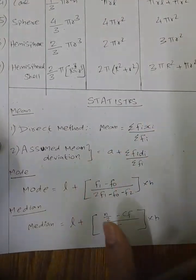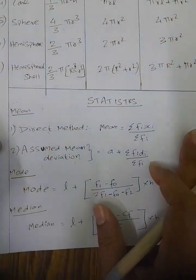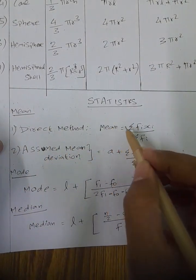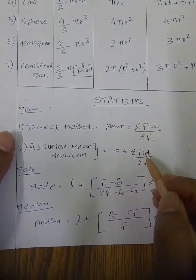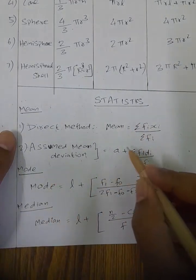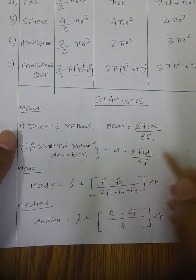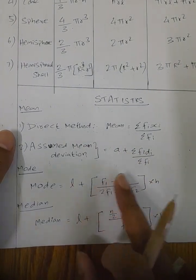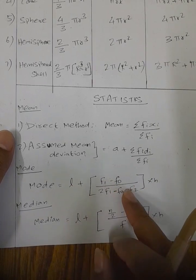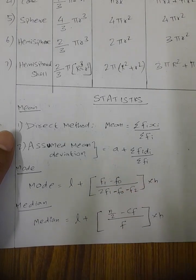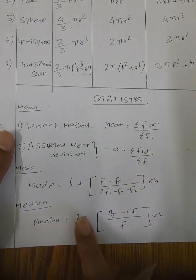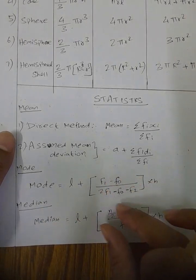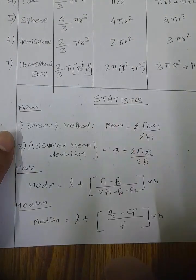Next, statistics — three concepts: mean, median, and mode. Mean by direct method: summation of f_i x_i divided by summation of f_i. Mean by assumed deviation method: A plus summation f_i d_i divided by summation f_i. Mode formula: L plus (f1 minus f0) divided by (2f1 minus f0 minus f2), into H. Median formula: L plus (N by 2 minus CF) divided by f, into H.